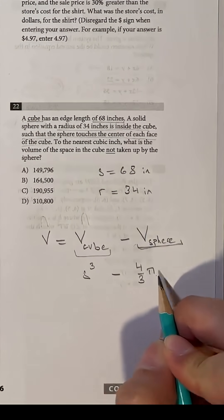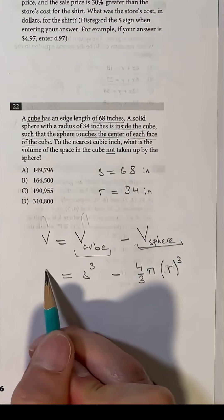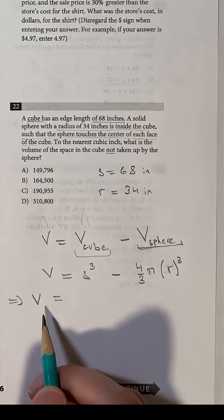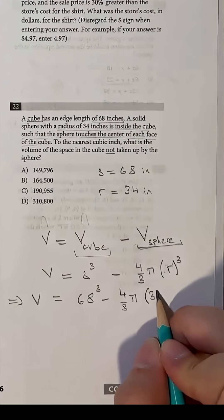Volume of the cube is side cubed, or S cubed, and the volume of the sphere is 4 over 3 pi R cubed. Now we insert the values of S and R. S is 68 and R is 34.